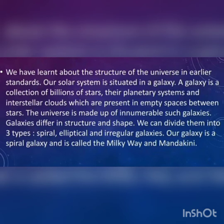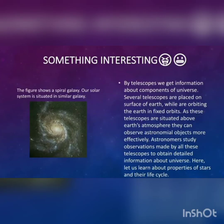Our galaxy is a spiral galaxy and it is called the Milky Way — Mandakini. The spiral galaxy is shown in figure number 19.1 on page 129. This figure shows the structure of a spiral galaxy.